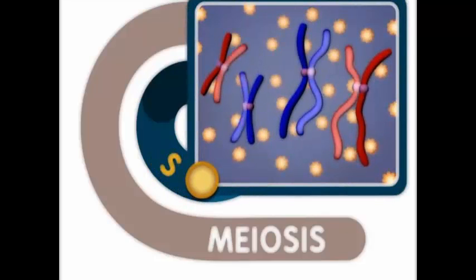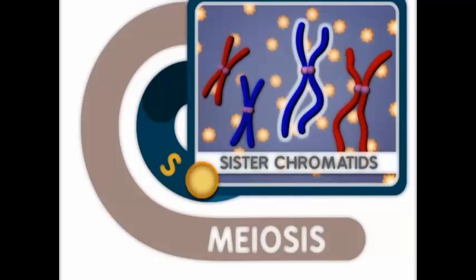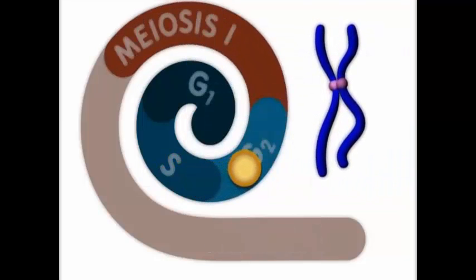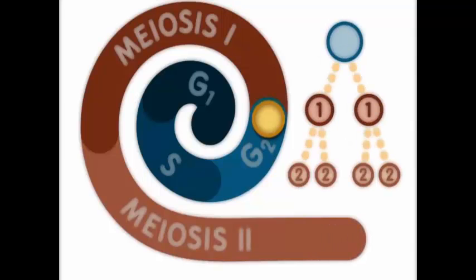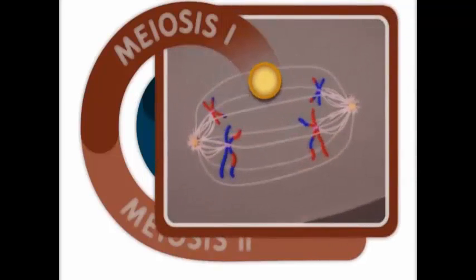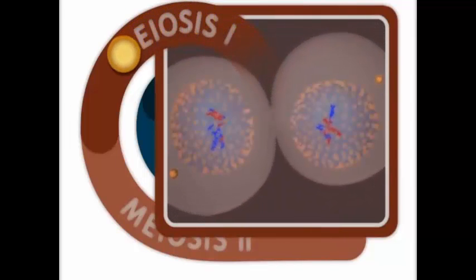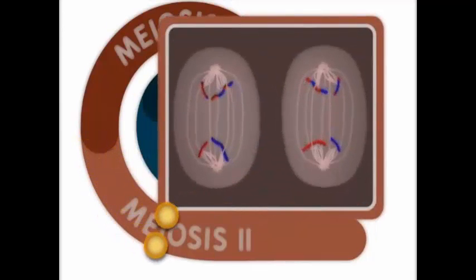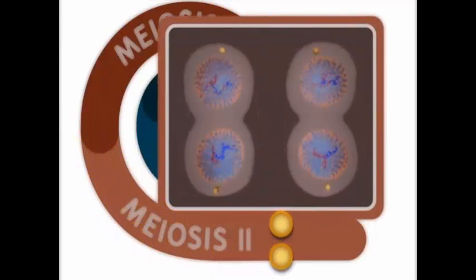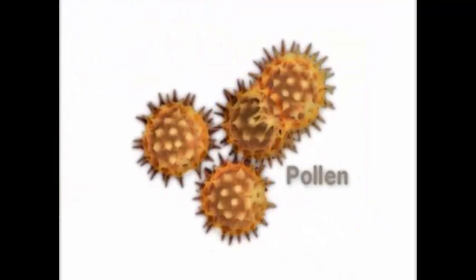Meiosis is just one step in the life cycle of a germline cell. Similar to mitosis, the cells also pass through the interphase, G1, S, and G2 stages before they enter meiosis. The DNA inside a germline cell is duplicated before meiosis begins during the S phase. The duplicated germline chromosomes are called sister chromatids. These chromatids remain attached to each other until the second cell division event in meiosis.